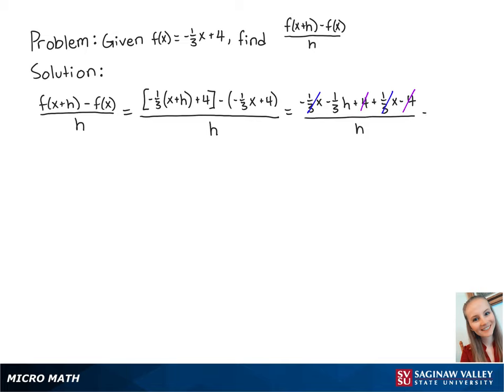So now we have negative 1 third h over h. We can also cancel out both of the h's so that we are left with negative 1 third, and this is the final answer.